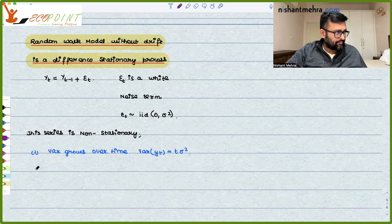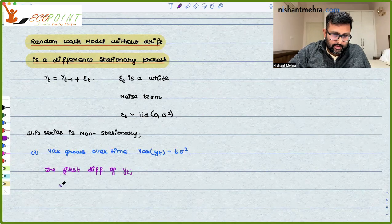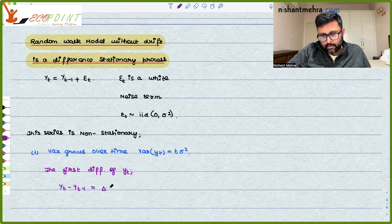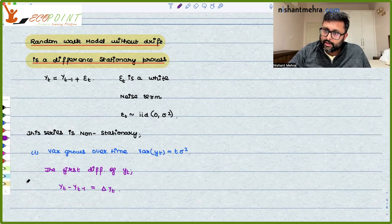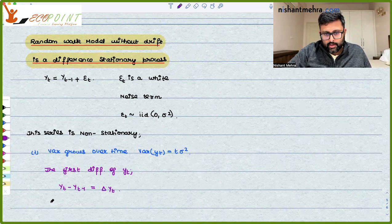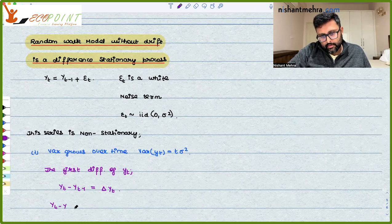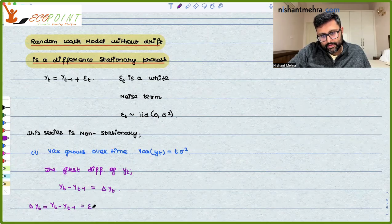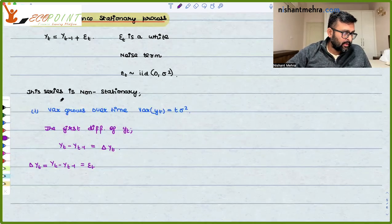Now let me just take the first difference. The first difference of yt is yt minus yt minus 1, that is delta yt. So you take the difference of the current value minus one lag value. So yt minus yt minus 1, that is what delta yt is, and that equals epsilon t.